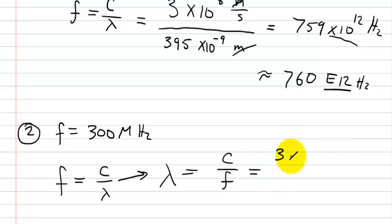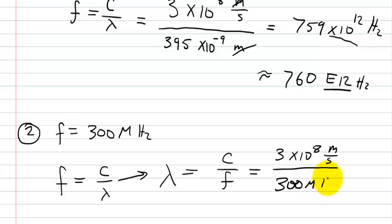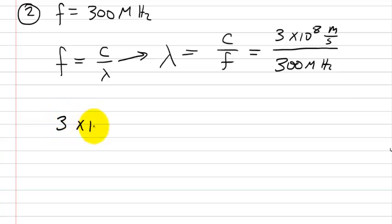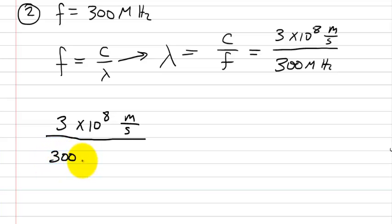The speed of light is 3 times 10 to the 8 meters per second, divided by the frequency of 300 megahertz. Mega is the same thing as times 10 to the 6, and since it's in hertz, we convert that to its actual units, which is 1 over seconds. So we have 3 times 10 to the 8 meters per second divided by 300 times 10 to the 6 over seconds.